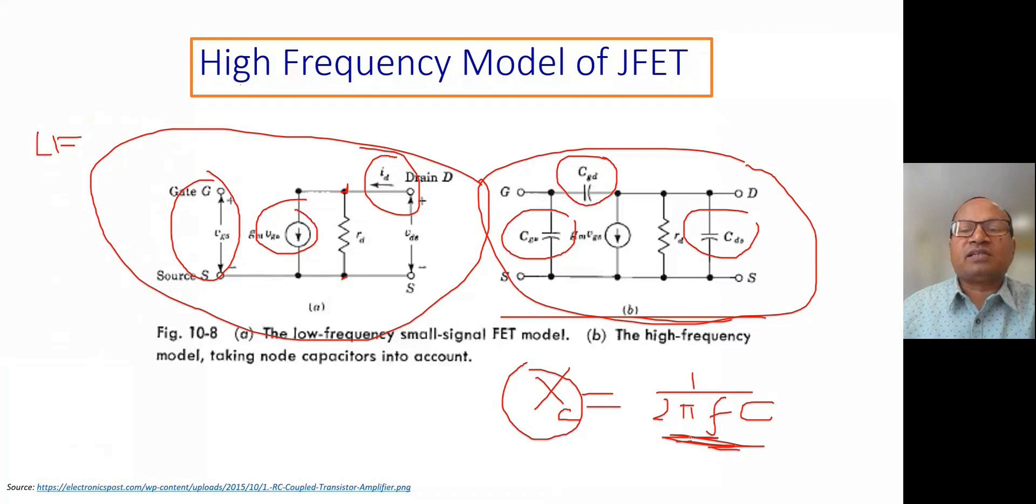But at high frequency, when frequency is higher, the impedances will not be large. That will be little lower value. So we cannot consider them as open circuit, and therefore, they are present - CGD, CGS, and CDS.